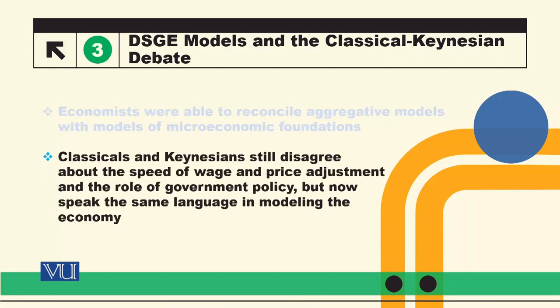Classical and Keynesian schools still disagree about the speed of wage and price adjustment and the role of government policies, but now they speak the same language in modeling the economy. The basic difference is the speed of price and wage adjustment — Keynesian means slowly adjusts and Classical means instantly adjusts — but now we have a common framework and a common model.